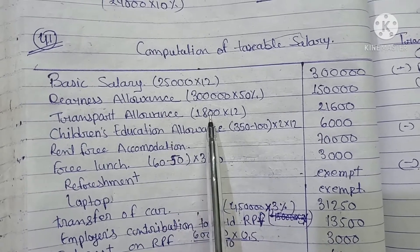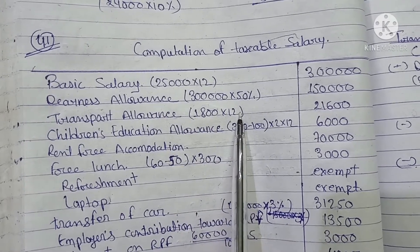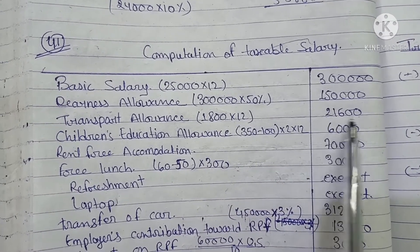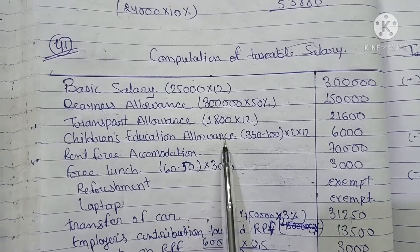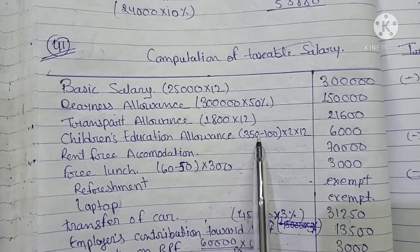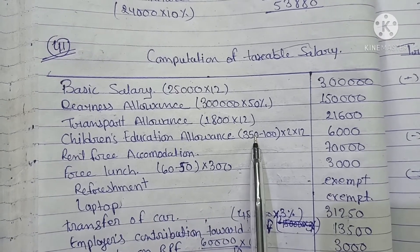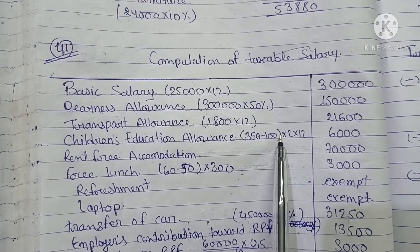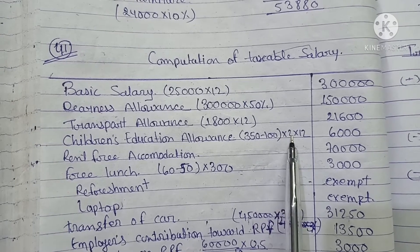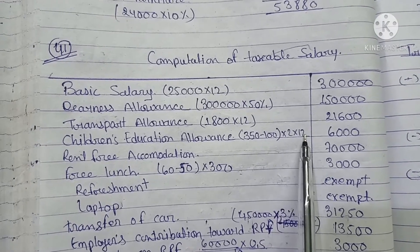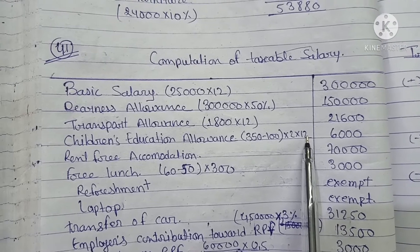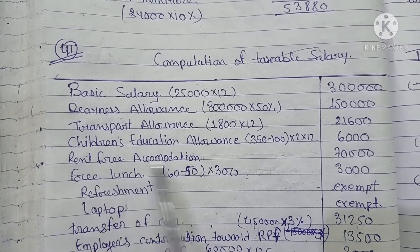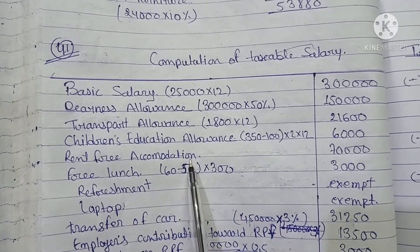Transportation allowance: $1,800 into 12 equals $21,600. Children's education allowance is ₹350 per child, so for two children it is 2 into 12, giving ₹6,000 for the whole year.